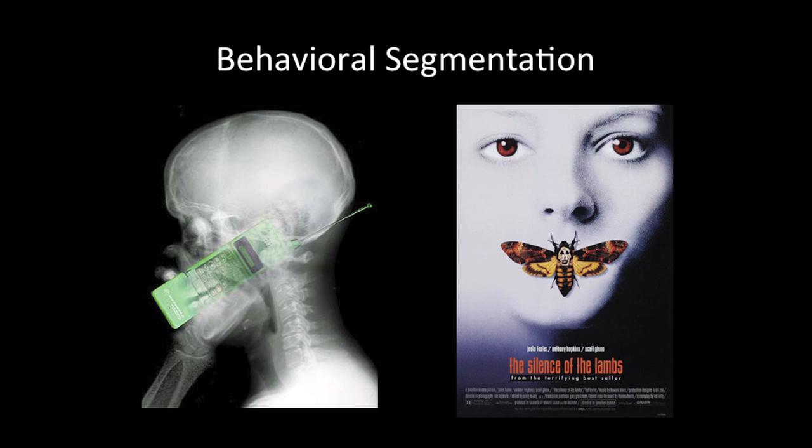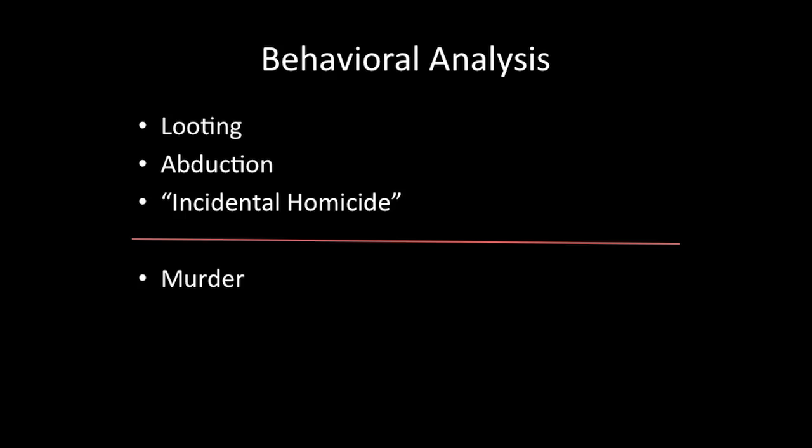The marketing community also knows that if we segment the population, we can make more targeted efforts — they sell phones differently to adults, to families, to teenagers. Similarly with crime analysis, if we break it out by crime type, we have a much better chance of identifying better factors. With the LRA, we broke it out into looting, abduction, incidental homicide — which occurred in response to these other events — and murder, which was an exclusive murder-only event.